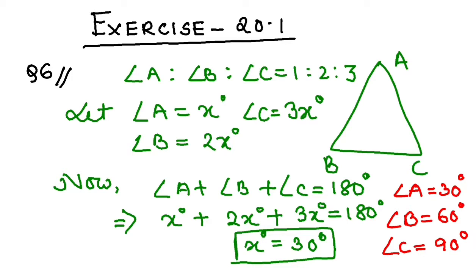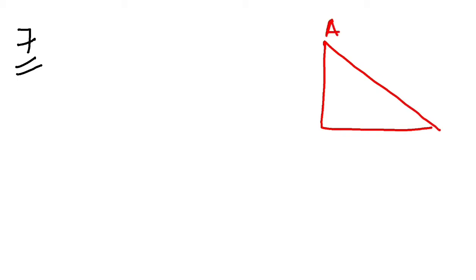Let's take question number 7 now. Let me clean this up. Question number 7 — please read the question. If the two acute angles of a right triangle are in the ratio 8:7, find the angles. We are given a right triangle ABC. Let's say angle B is 90 degrees.